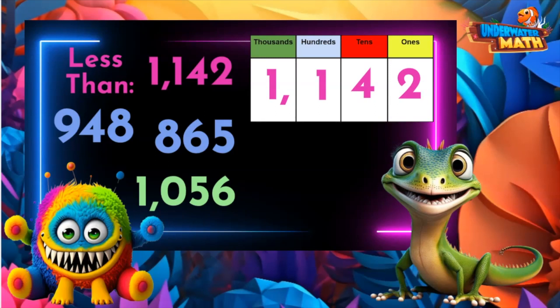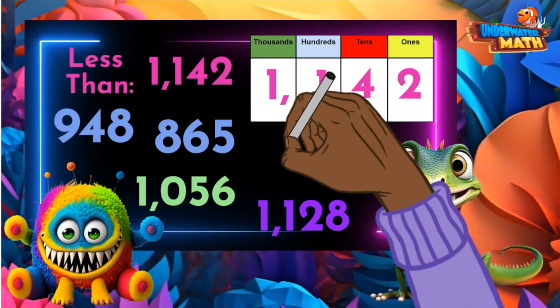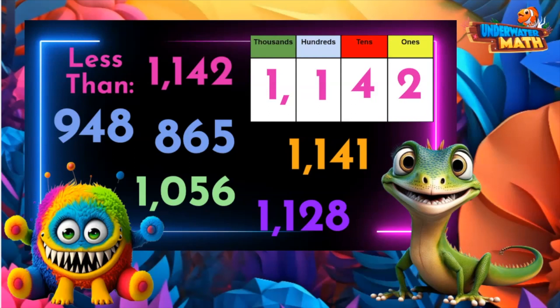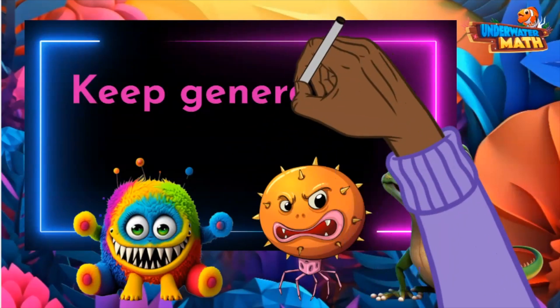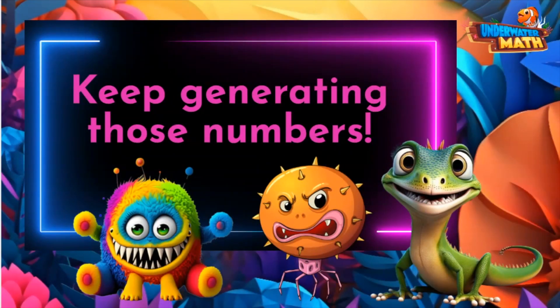I can also make a number that is less if it has the same number of thousands and hundreds but less than four tens, like 1128. And look at 1141 — it has the same number of thousands, hundreds, and tens, but only one one instead of two. All of these numbers are less than 1142. Great work in the jungle today — keep generating those numbers!